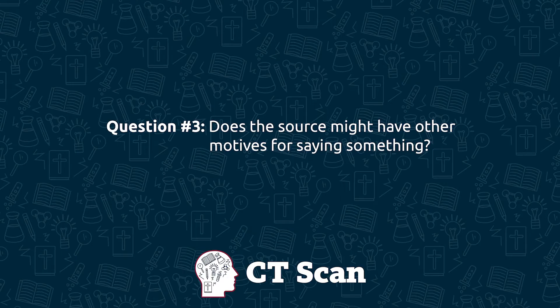Finally, the third question to ask is whether the source might have ulterior motives for saying what they're saying. People say and do things for a lot of different reasons, and not all of it may be obvious. News reporters, for instance, often have to write in a way to keep their readers and advertisers happy. So what gets published and how it's worded can be very financially and politically driven. And that's all really helpful to keep in mind when considering a message source.